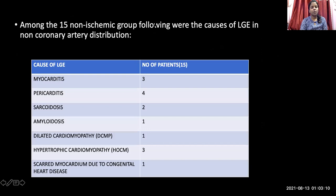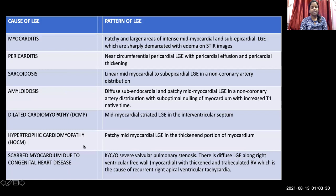Among the 15 non-ischemic group cases showing late gadolinium enhancement, we had three cases of myocarditis, four cases of pericarditis, two cases of sarcoidosis, one case of amyloidosis, one case of dilated cardiomyopathy, one case of scarred myocardium due to congenital heart disease, and three cases of hypertrophic cardiomyopathy. These represent different specific patterns of non-ischemic late gadolinium enhancement.